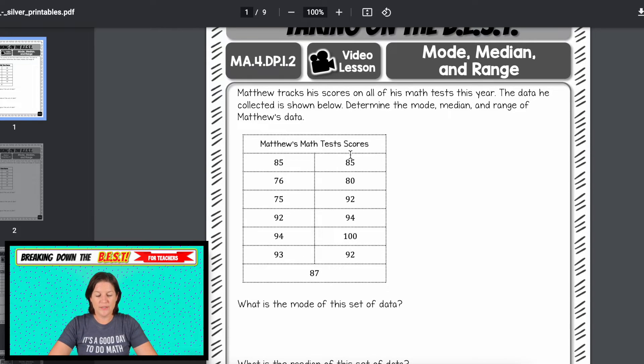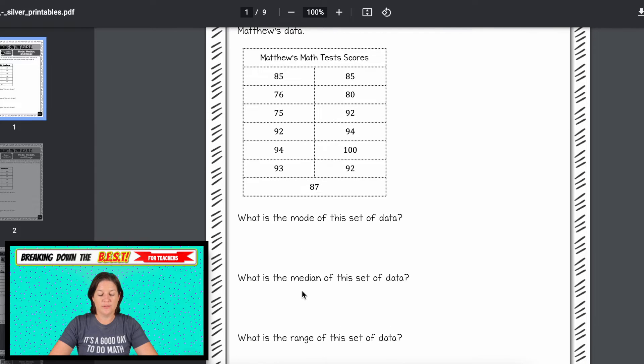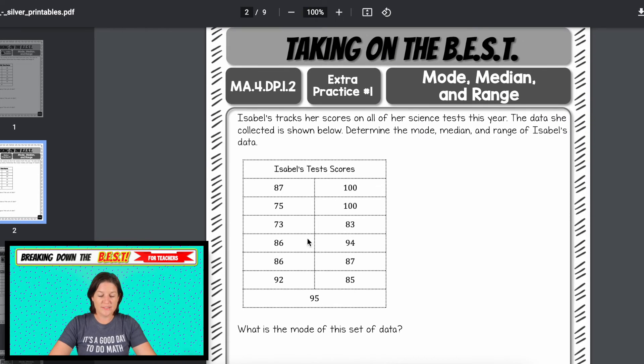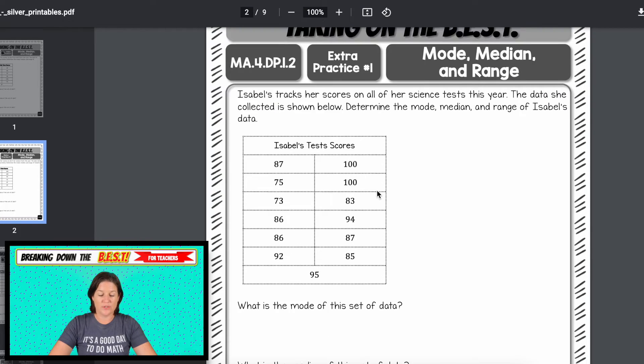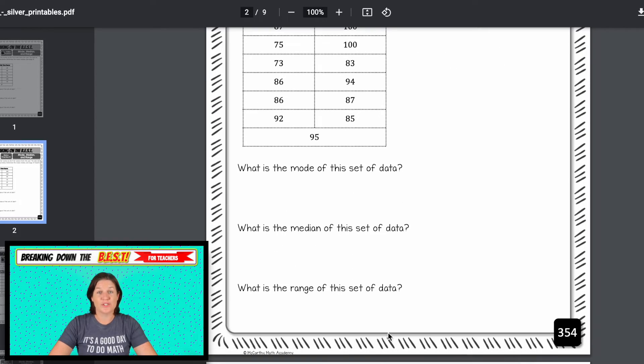The way that this is organized with the printables is that it does include the bronze video lessons and then the extra practice follows. Here we have Matthew's test scores right here, and we're going to determine the mode, the median, and the range of his data. So first we'll organize it from least to greatest, then determine the mode, the median, and the range. Then students will have extra practice. Now we have Isabella's test scores. Same thing, put them in order, determine the mode, the median, and the range. Students can use their notes from the video lesson to help them practice here.